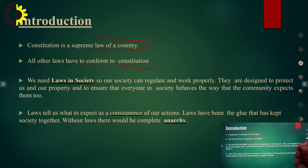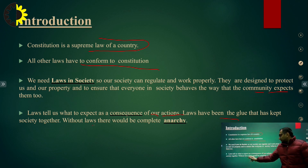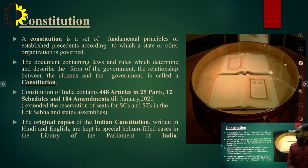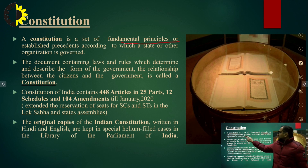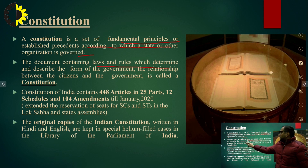We need laws in society so our society can regulate and work properly. They are designed to protect us and ensure that everyone in society behaves the way the community expects them to. These laws also tell us what to accept as a consequence of our actions. Laws have held society together; without laws, there would be complete anarchy. The constitution is defined as the set of fundamental principles or established precedents according to which a state or other organization is governed. It contains laws and rules which determine the form of government and the relationship between the citizens and the government.